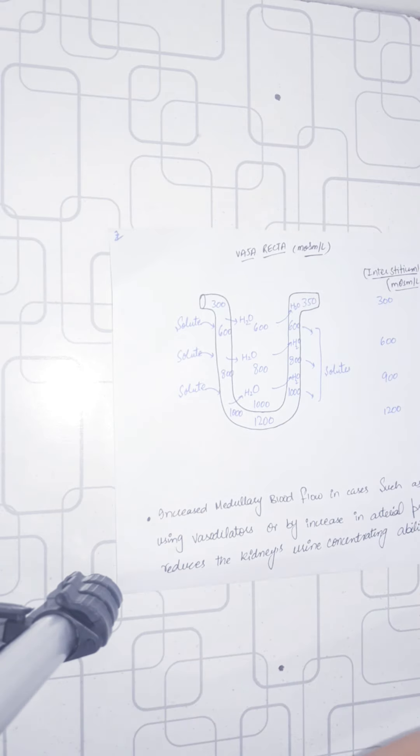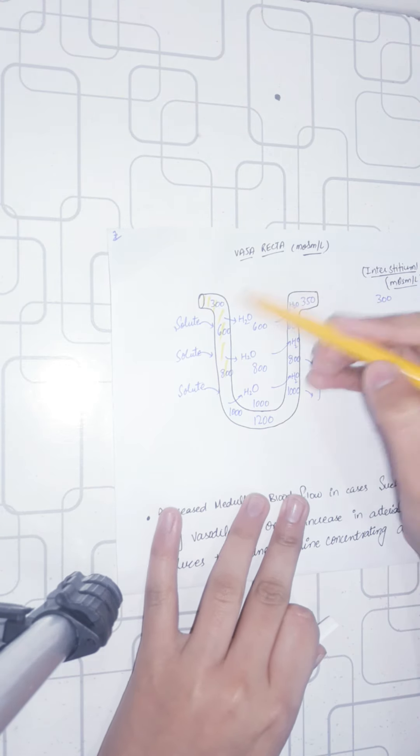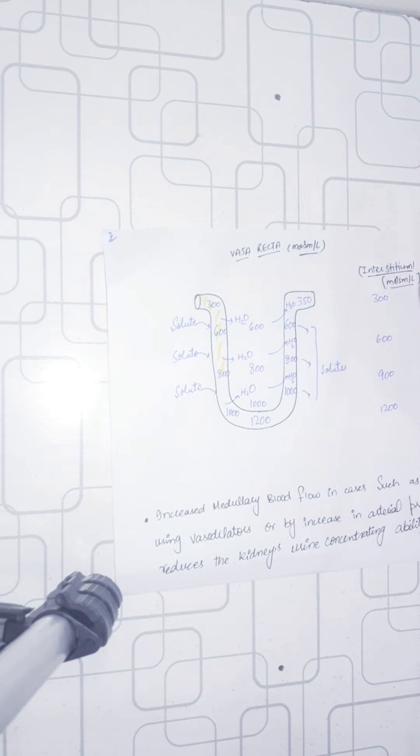We have to see this diagram. This is our diagram. The black image is what we have - the vasa recta. The vasa recta has a descending limb, an ascending limb, and a loop. The importance of the U shape is that the counter-current exchanger acts with the U shape.